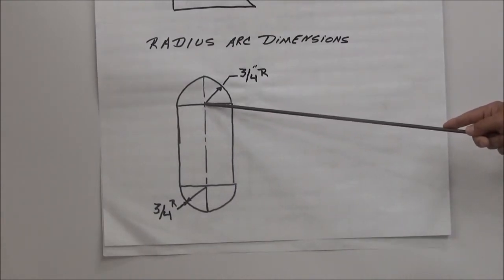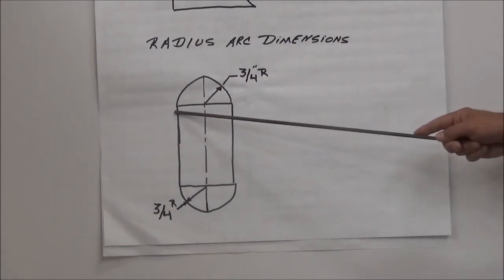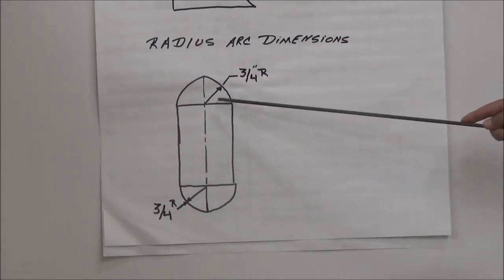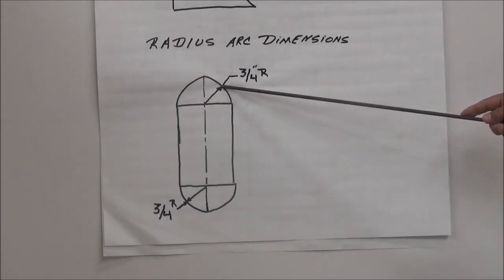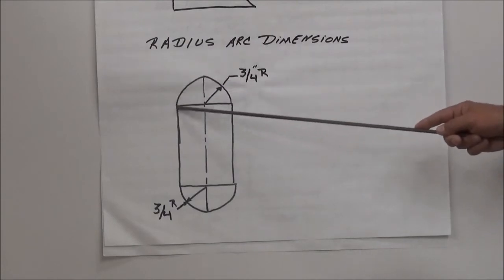If this is three quarters of an inch, this is called your radius, not your diameter. The diameter would be two times the radius, so this would be an inch and a half across here. You would set your dividers or your measuring device at three quarters of an inch and then you would draw this arc.